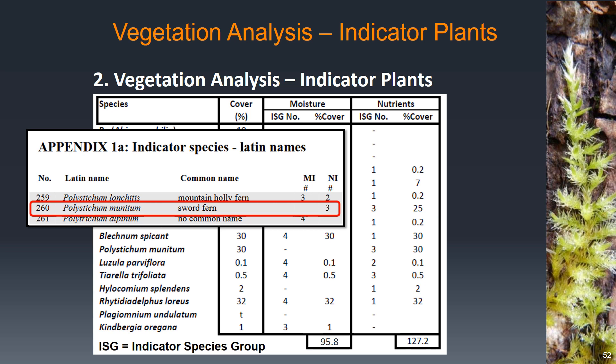We do the same for the other plants. Polystichum munitum, or sword fern, is not a good indicator for moisture because it can grow in a wide range of conditions, so it's blank in the appendix. But it's a member of indicator species group 3 for nutrients. When we enter that, it's really important that even though it wasn't an indicator for moisture, to put a little dash or an X there, so it's clear if we need to look back at the form that we looked it up and it wasn't an indicator, rather than that we just forgot to enter it.